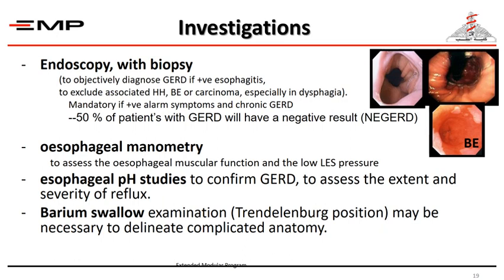Endoscopy is very important and should be performed with biopsy for any lesion detected. It diagnoses GERD if there is positive esophagitis — the objective diagnosis. It is also important to exclude associated hiatus hernia, Barrett's, and carcinoma, especially in cases presenting with dysphagia. It is mandatory for any patient presenting with alarm symptoms. In 50 percent of GERD patients, there may be negative results — non-erosive GERD. Manometry assesses esophageal musculature and LES pressure, sometimes done before surgery. pH study confirms reflux disease and assesses extent and severity. Barium swallow in Trendelenburg position may delineate complicated anatomy.